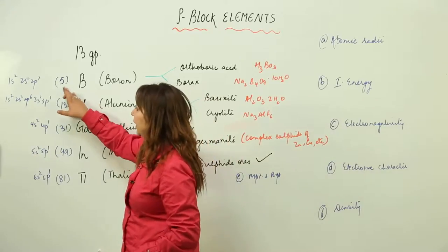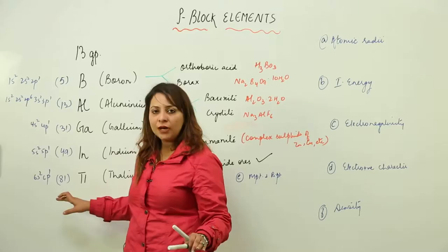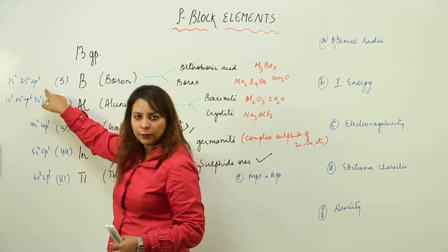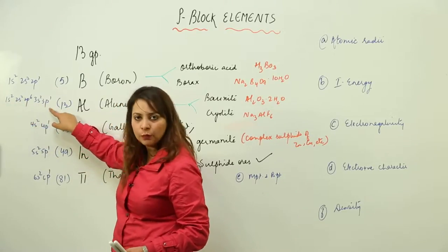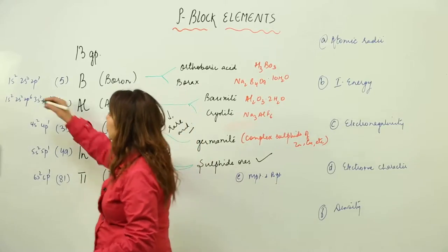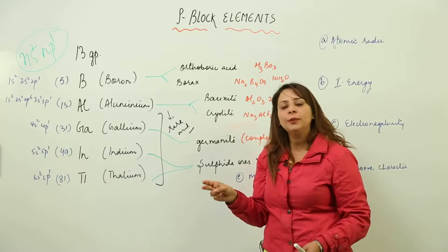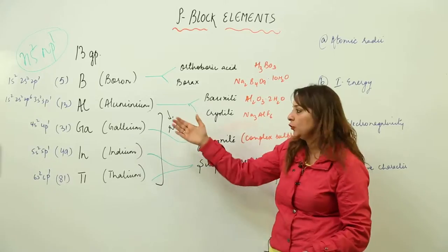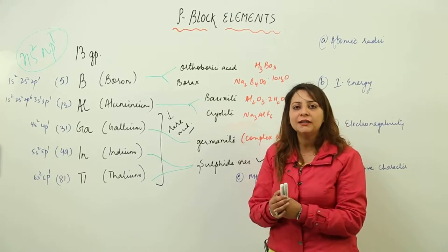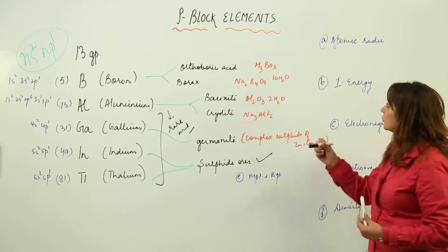The atomic numbers are: boron 5, aluminium 13, gallium 31, indium 49, and thallium 81. The electronic configurations are filled in order — for example, boron is 1s² 2s² 2p¹ and aluminium is 1s² 2s² 2p⁶ 3s² 3p¹. The general electronic configuration for Group 13 is ns² np¹; the inner core differs but the outermost configuration remains the same.